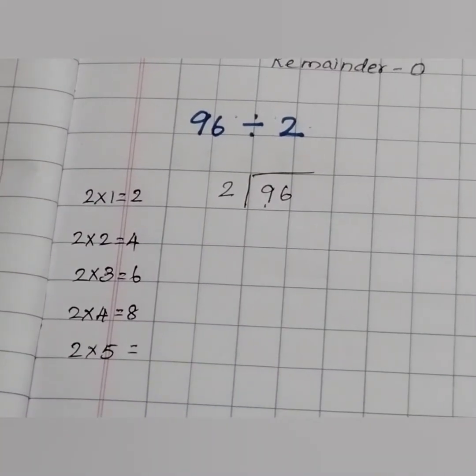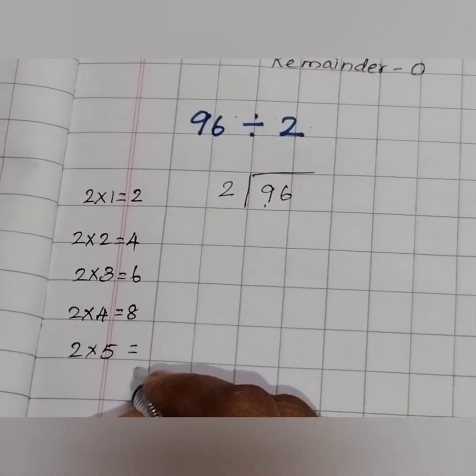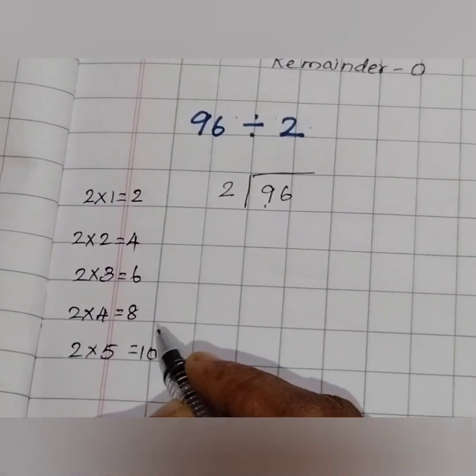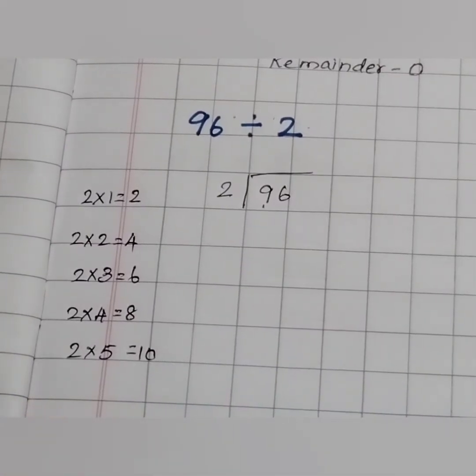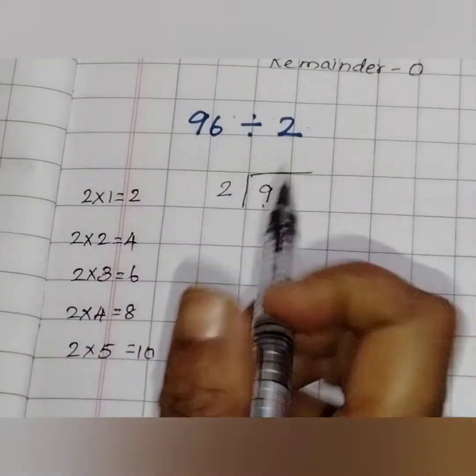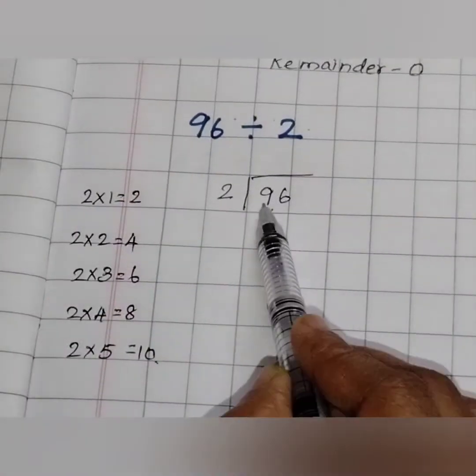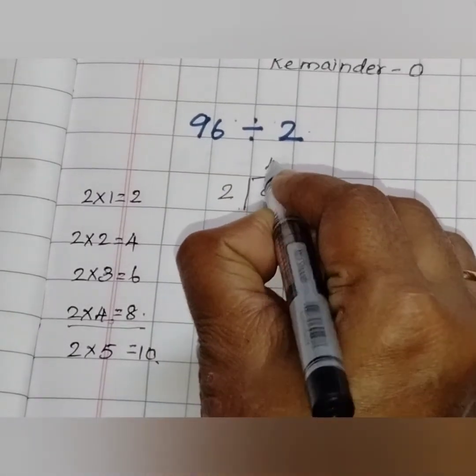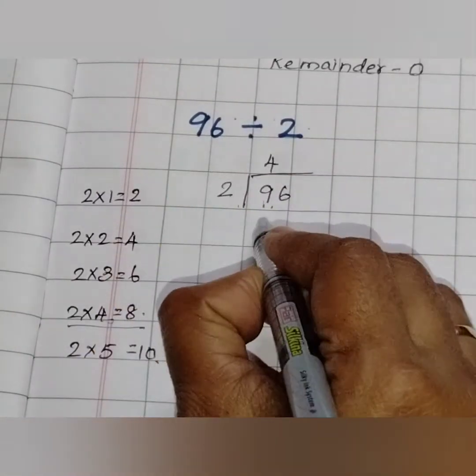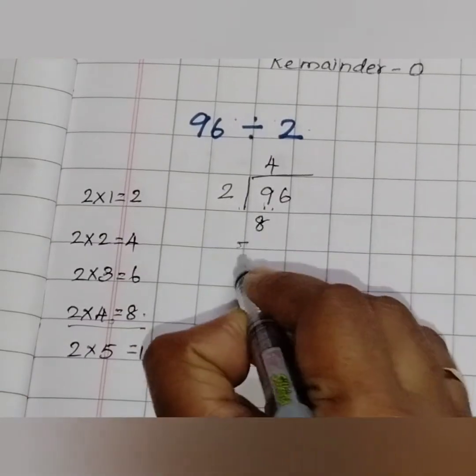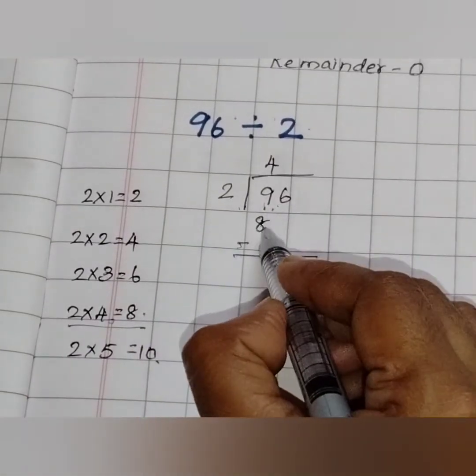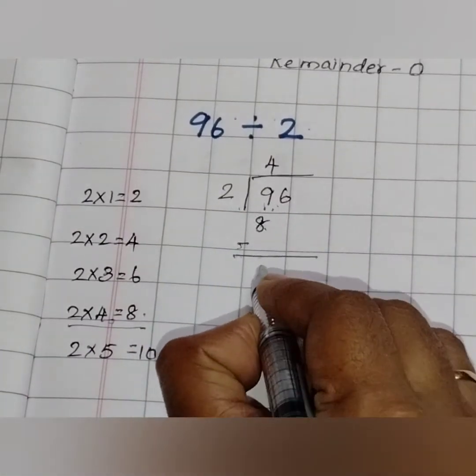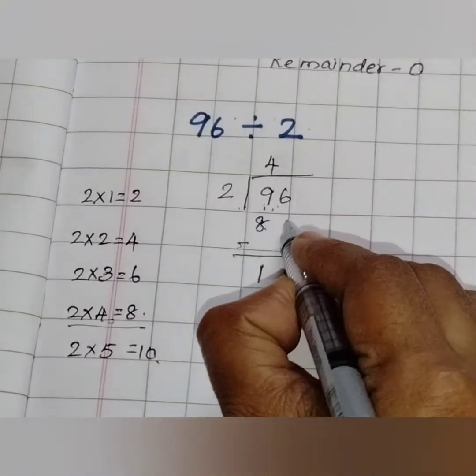So no, 9 is not there. What shall we do? We have to take the lesser number. In the previous class, I told you, we will be taking equal or lesser number. Do you remember? Yes. Now 8. 2 fours are 8. And 9 minus 8 is 1. Now bring down the 6.